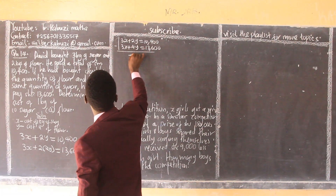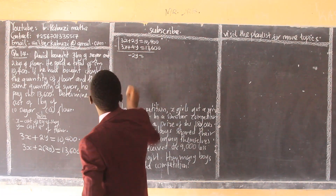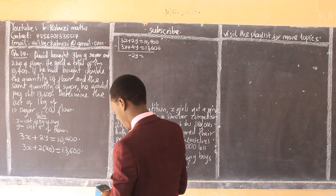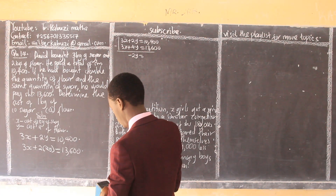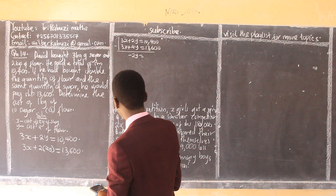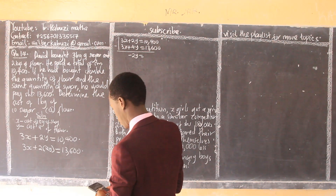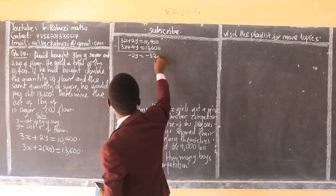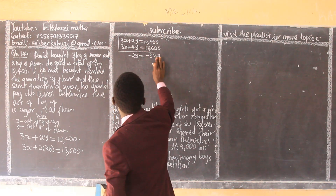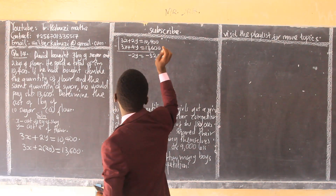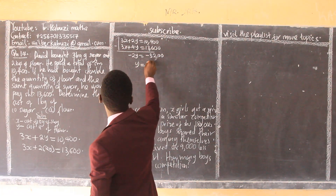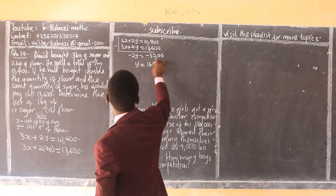Because I have the same x-coefficient in both equations, I subtract. That gives me negative 2y equals negative 3,200. Dividing through by negative two, my y becomes 1,600.